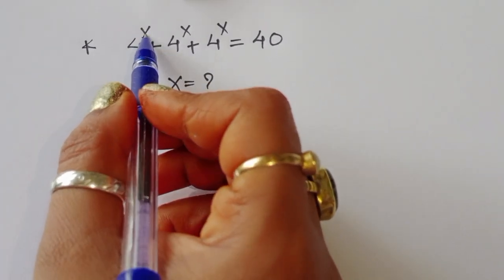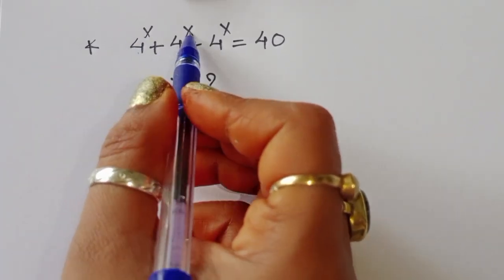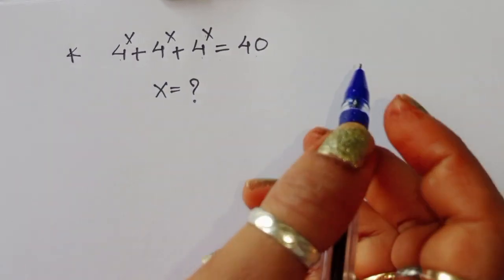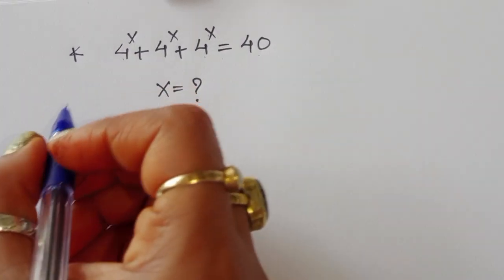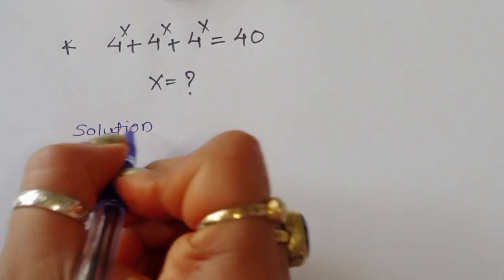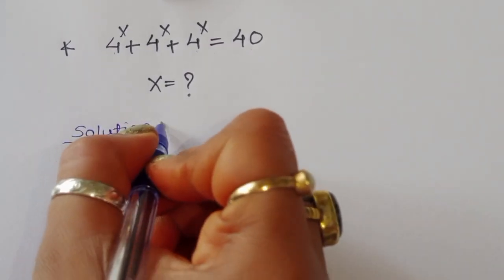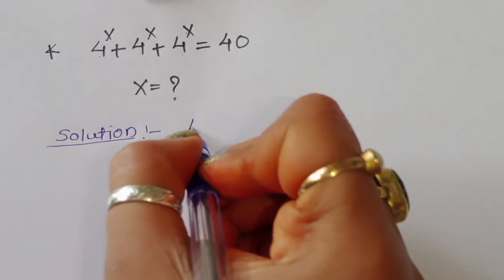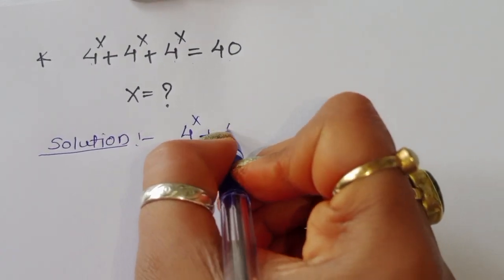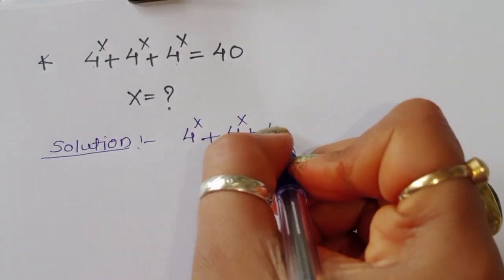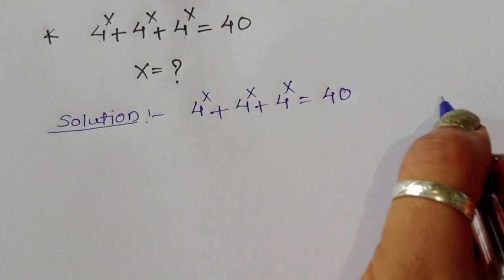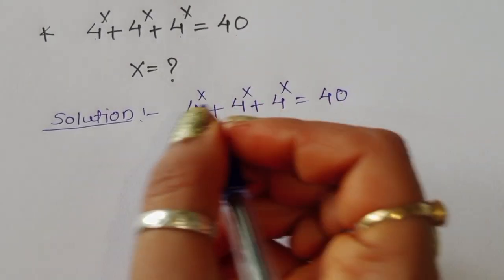Given 4^x plus 4^x plus 4^x is equal to 40, we have to find the value of x. Let's see the solution. 4^x plus 4^x plus 4^x is equal to 40.